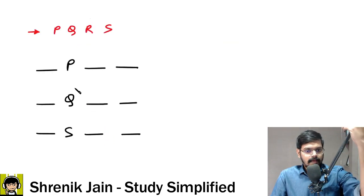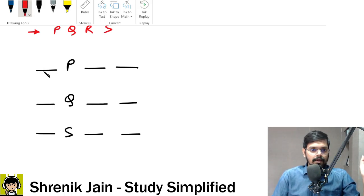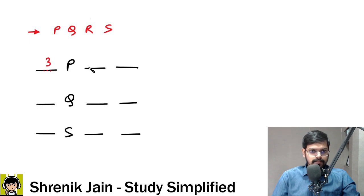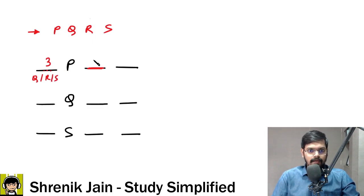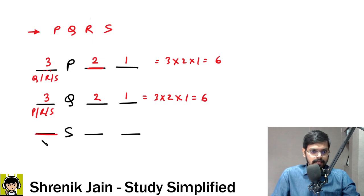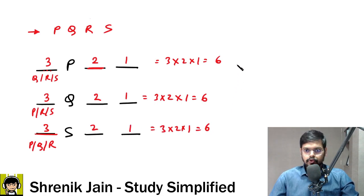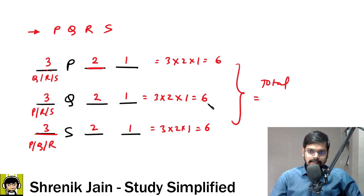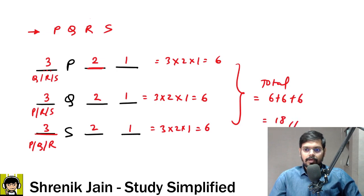Fixing the second position: Case 1 — P is at the second position. Then R, Q, S can fill the remaining three spots: 3×2×1 = 6 arrangements. Case 2 — Q at the second position: similarly 3×2×1 = 6. Case 3 — S at the second position: again 3×2×1 = 6. So total distinct arrangements where R is not seated at the second position from the left = 6 + 6 + 6 = 18.